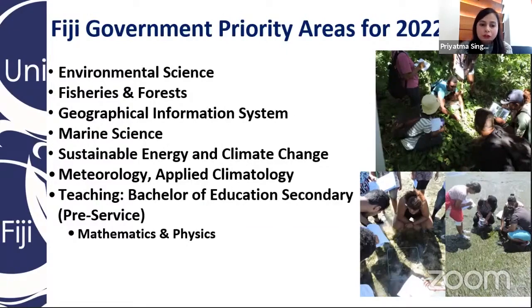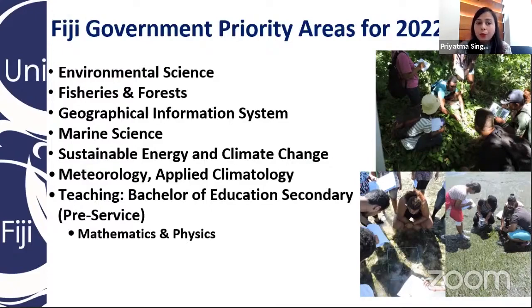This would mean that there will be a lot of funding and project opportunities coming our way, where we will need students who have a background in environmental science or natural sciences to work in the area of climate change mitigation and adaptation. This also includes meteorology and applied climatology. A Bachelor of Education secondary — in particular mathematics and physics — is a government priority area for 2022 as well.